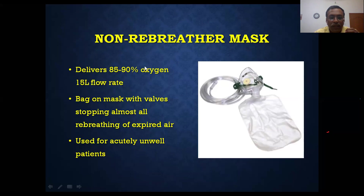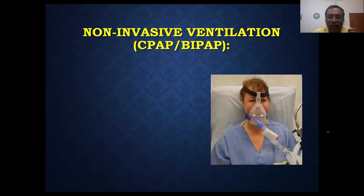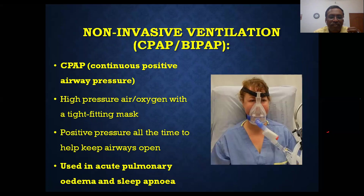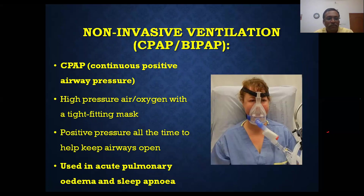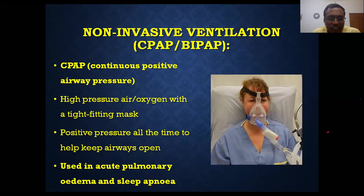Next is CPAP — commonly called an NIV mask. With this tight-fitting mask, continuous positive pressure is maintained in both phases of respiration — inspiration and expiration. It uses a high-pressure air-oxygen mixture and is very uncomfortable for the patient, who cannot swallow or eat. It can be used in acute respiratory failure — both hypoxemic and mild pulmonary edema cases — and is also commonly used in sleep apnea syndrome in obese patients at home.